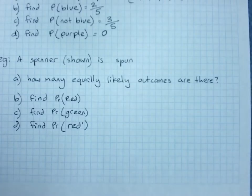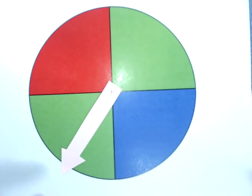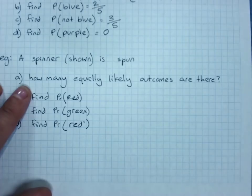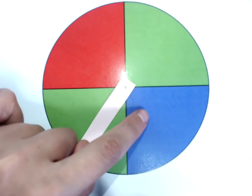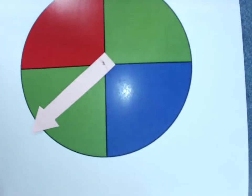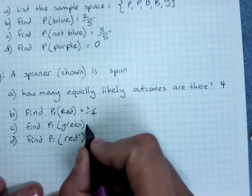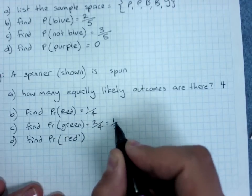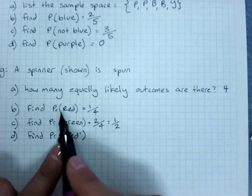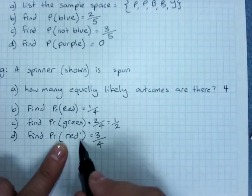We spin a spinner. I've got a spinner here. Now you'll notice there's two quarters are green, one's red, and one's blue. How many equally likely outcomes are there? There's four - red, blue, this green, and this green. The probability of getting red is one out of a total of four. Probability of getting green is two out of four, which simplifies to one-half. And the probability of getting not red - if the probability of getting red is one out of four, the probability of getting not red is three out of four. They're complementary events, so they must add up to one in total.